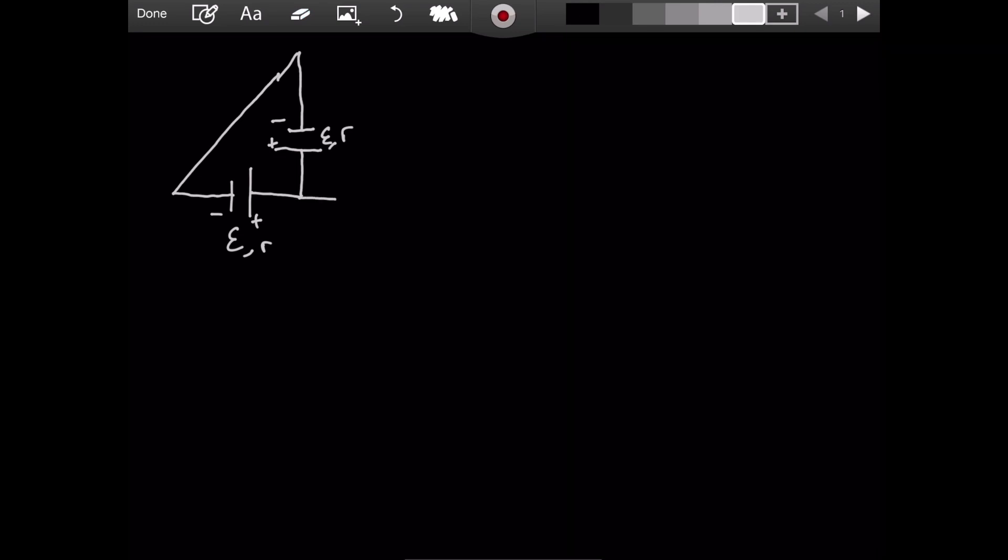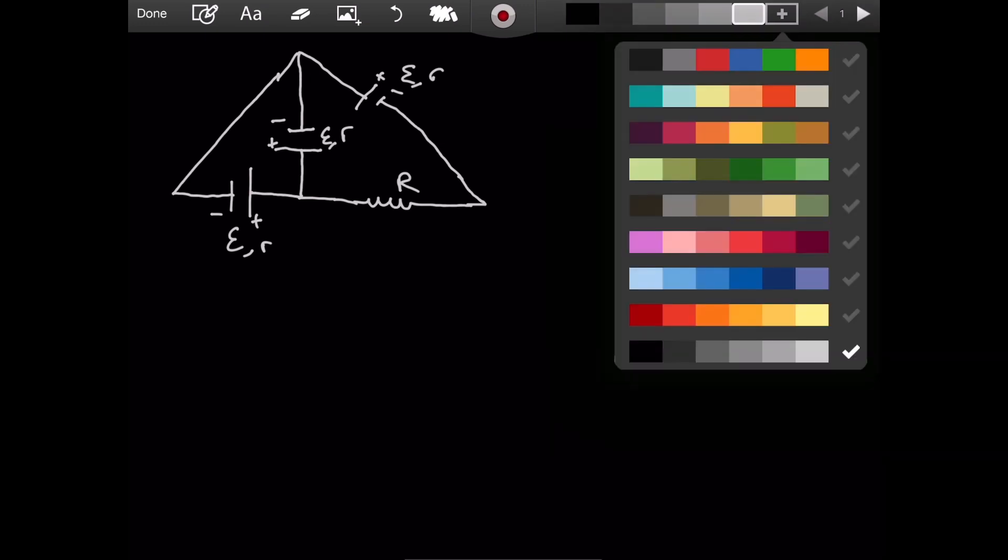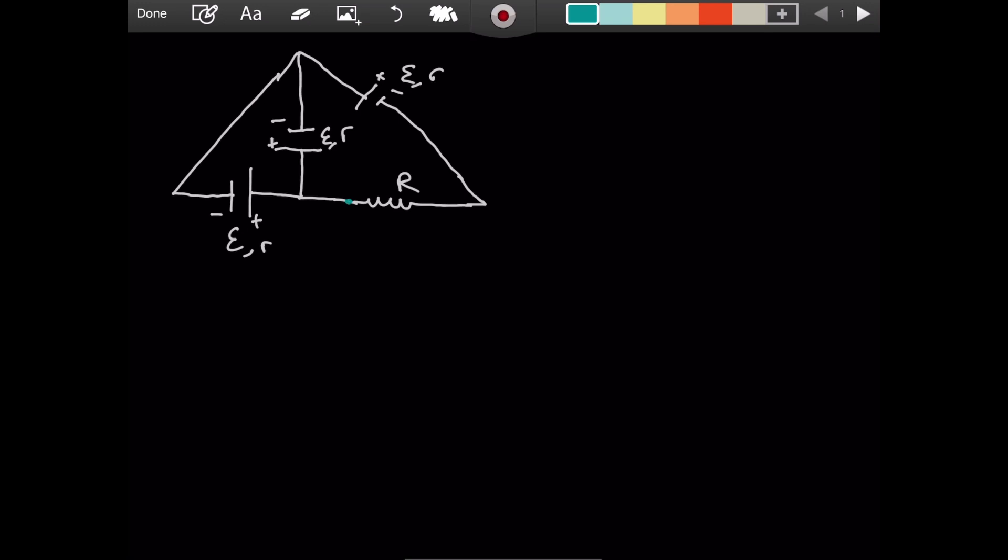And now we continue it like this. There is yet another identical battery. And then here we will have a resistance with a resistance value of R. A resistor, I meant. We have a resistor with a resistance value of R. So between the two sides, like this, there is a voltmeter, an ideal voltmeter.